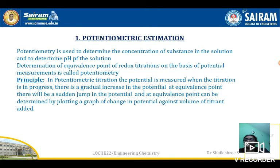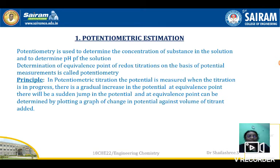There are two types of potentiometric titrations. Usually we take redox titration as an example. The principle of potentiometric titration is that we measure the potential when the titration is in progress. The analyte solution is in the beaker and the standard solution is added from the burette. After each addition, the solution is bubbled to mix, and the potential is measured.